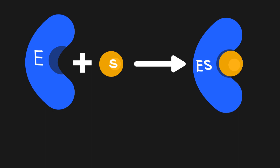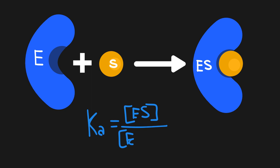With this in mind, let's look at the Ka value, or the equilibrium constant of association. Again, it's still equal to the products over the reactants, except this time it's flipped. So the products in this case are going to be the concentration of the enzyme-substrate complex over the concentration of the enzyme times the concentration of the substrate.